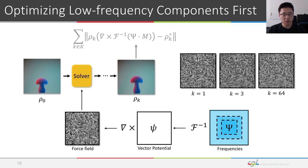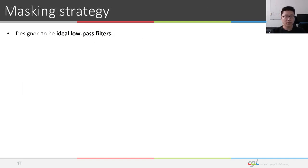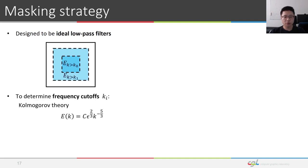Since the inverse Fourier transform is differentiable, we can compute the gradients with respect to this set of parameters. We design our filter mask as ideal low-pass filters. To determine the frequency cutoffs of each phase of the optimization, we heuristically enforce the optimization to always resolve the same amount of turbulence energy at each phase. For this, a multiplier of 2 to the power of 3 over 2 is obtained. We can apply the splitting recursively to obtain a series of cutoff frequencies for ideal low-pass filters.